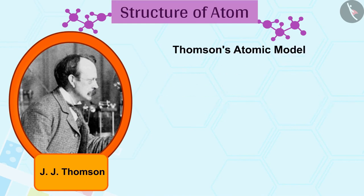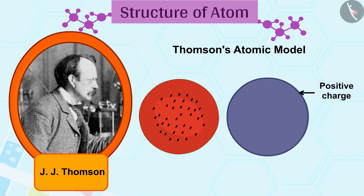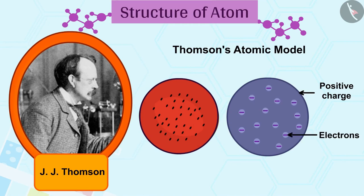Thomson presented a model related to the structure of an atom that was like a watermelon. According to this, the positive charge in the atom is spread all over like the red edible part of the watermelon, while the electrons are studded in the positively charged sphere like the seeds in the watermelon.